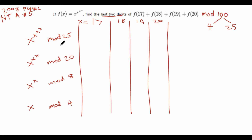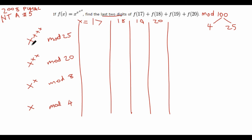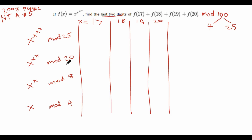We'll start by doing the mod 25 part, and I have a handy table already drawn out here. If we want to find 17 to the 17 to the 17 to the 17 mod 25, that's still pretty big to evaluate. So we can use Euler's theorem to instead find x to the x to the x mod 20 — since 20 is the totient of 25 — and then plug that value back in mod 25. Solving x to the x to the x mod 20 is still hard, so we go one step further and find x to the x mod the totient of 20, which is 8.